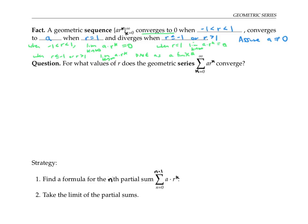Now I'd like to find similar rules in terms of r for when a geometric series converges or diverges, again assuming a is not zero. Our strategy is to find a formula for the nth partial sum of the series, and then take the limit of partial sums, since by definition that limit tells us whether the series converges or diverges. Before carrying out that strategy, let's consider one special case: when r equals one, the series is just a plus a plus a plus a, and so that diverges to infinity if a is positive, or to negative infinity if a is negative. So for r equals one our series diverges, and from now on we'll assume r is not equal to one.